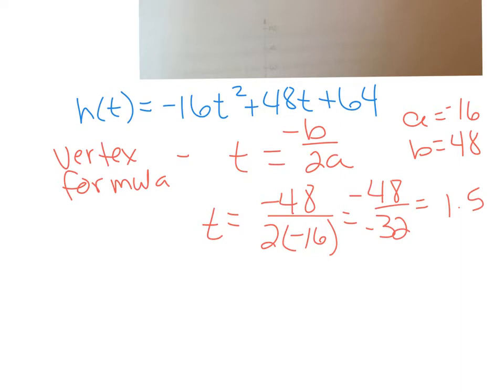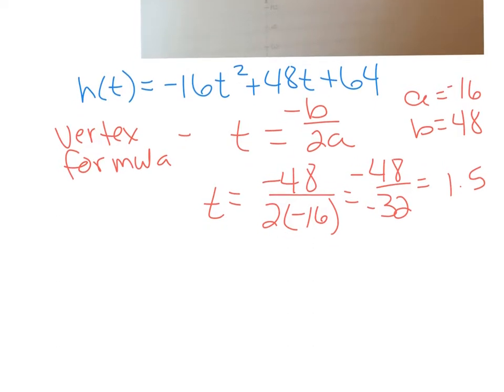What does that mean? That means that t or the time that the object is at its maximum height will be 1.5 seconds since we solved for t. Now, how do we find out what that maximum height actually is? We take that time and we substitute it in here for t and then we simplify. So I'm just going to scroll up a little bit.